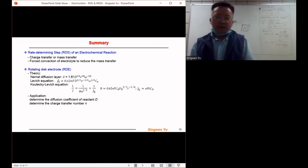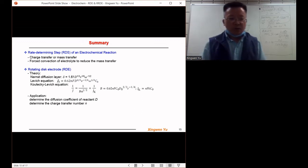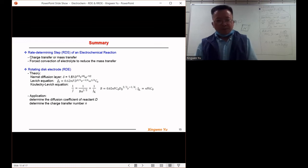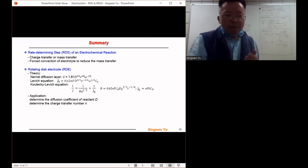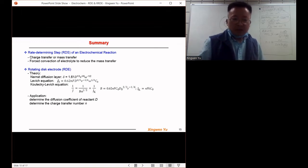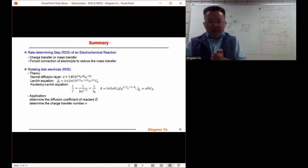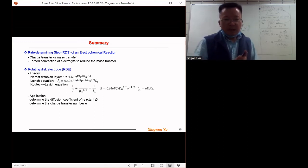After that, we introduced the rotating disk electrode from the theory and the application perspectives. So the theory is based on the Nernst diffusion layer and the thickness of the Nernst diffusion layer as derived by the scientist Levich. And then we studied the Levich equation.